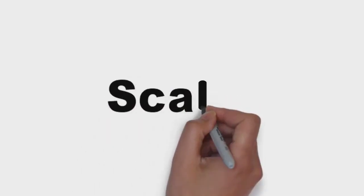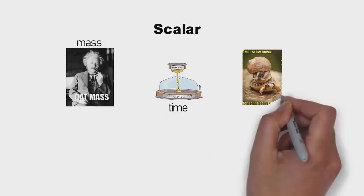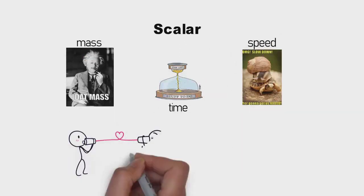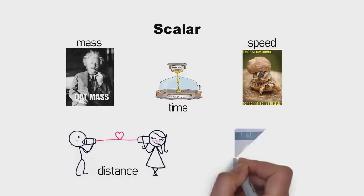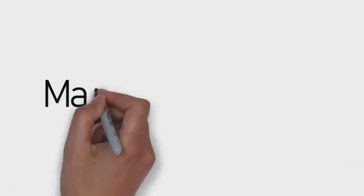To understand vectors, you have to first know what a scalar is. Scalar is a quantity that has only magnitude. Examples of scalar quantities include mass, time, speed, distance, volume, and so on.